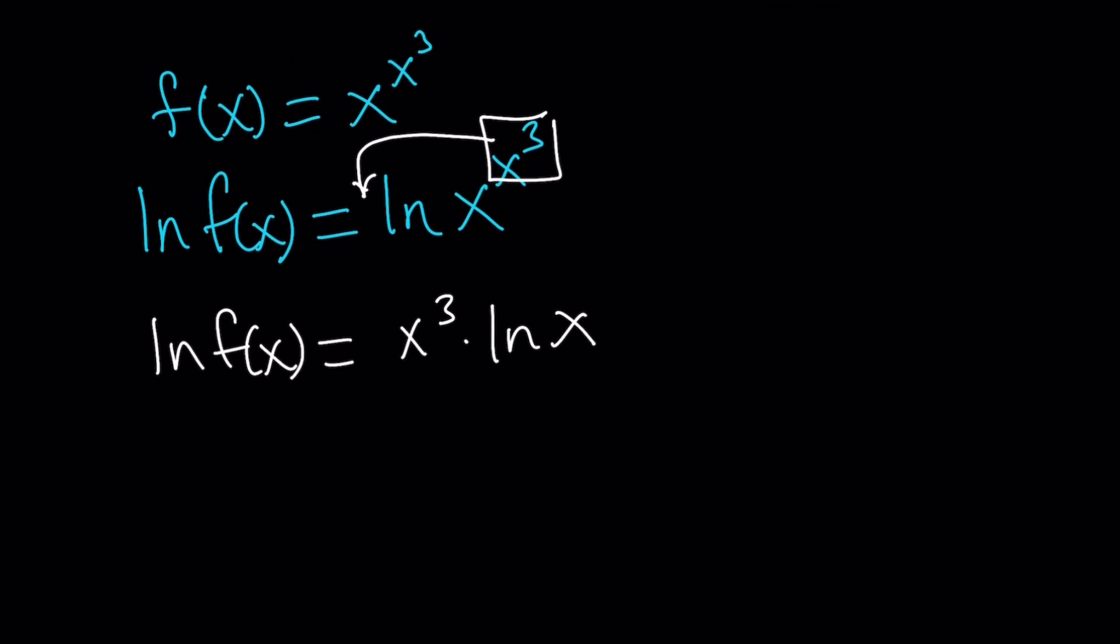ln f of x equals x cubed times ln x. And now we're going to differentiate both sides. The reason why we had to do this first is because when you have a function like g of x to the power h of x, like two different functions of x, and they're in the base and the exponent, then we don't have any rules for this. And there is a rule for it. Actually, you differentiate like an exponential function and then a polynomial and then combine them. But that's another topic. We'll probably talk about it later.